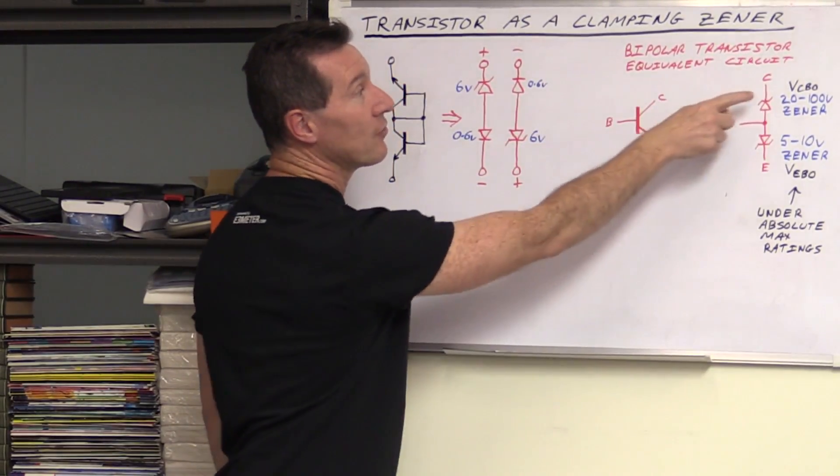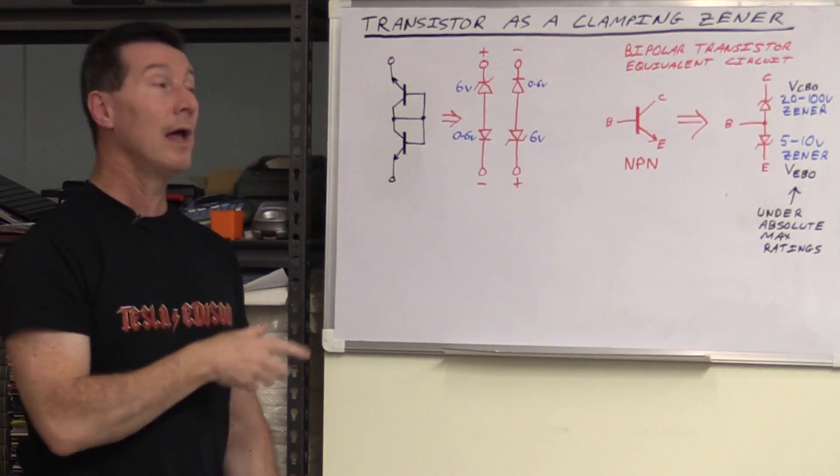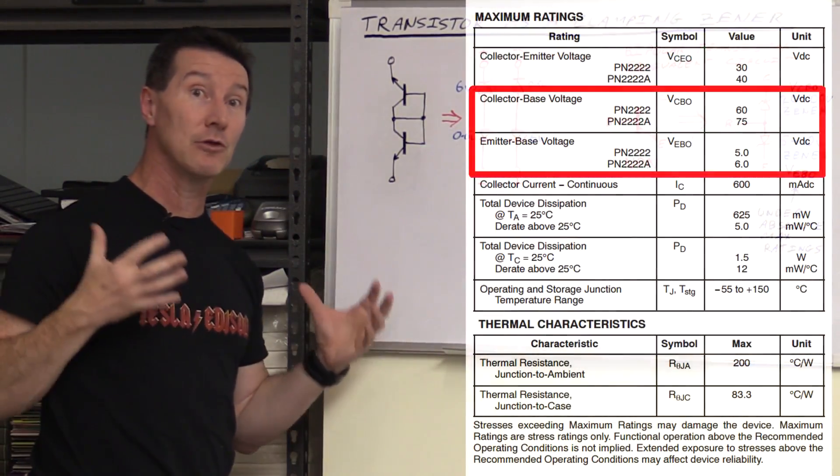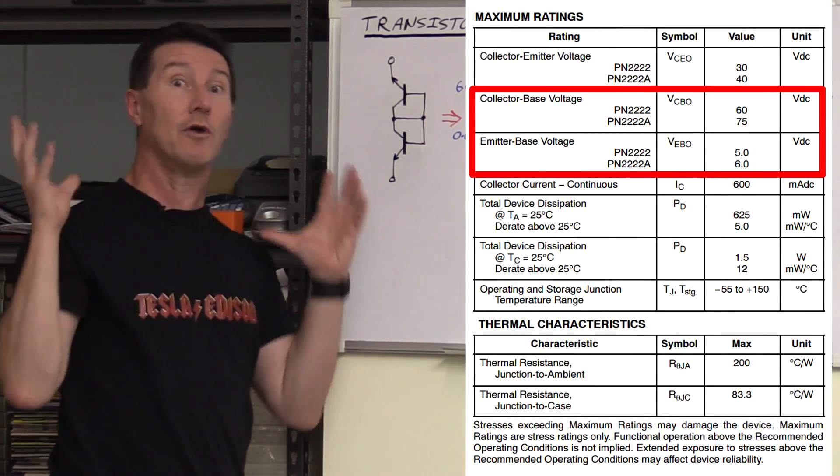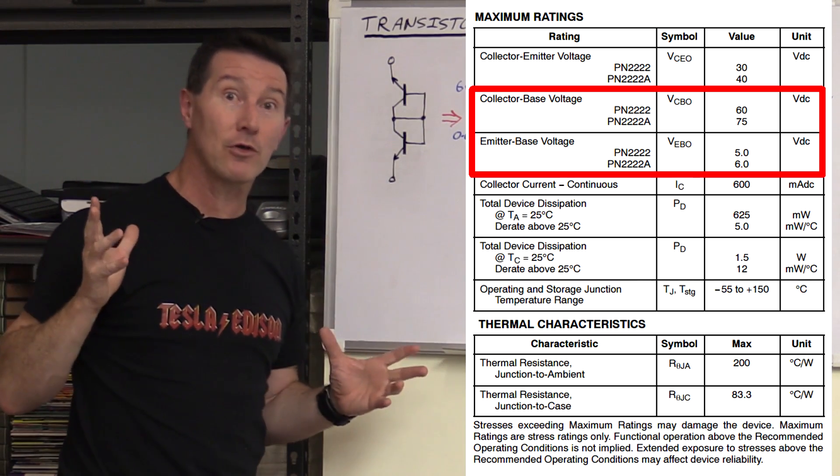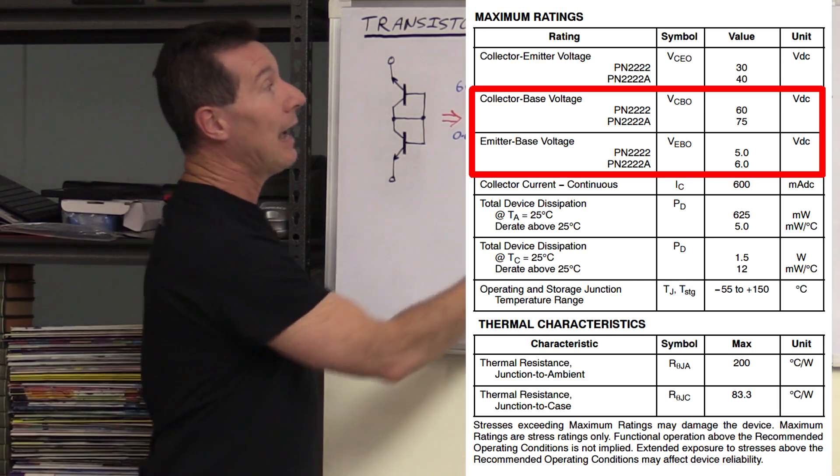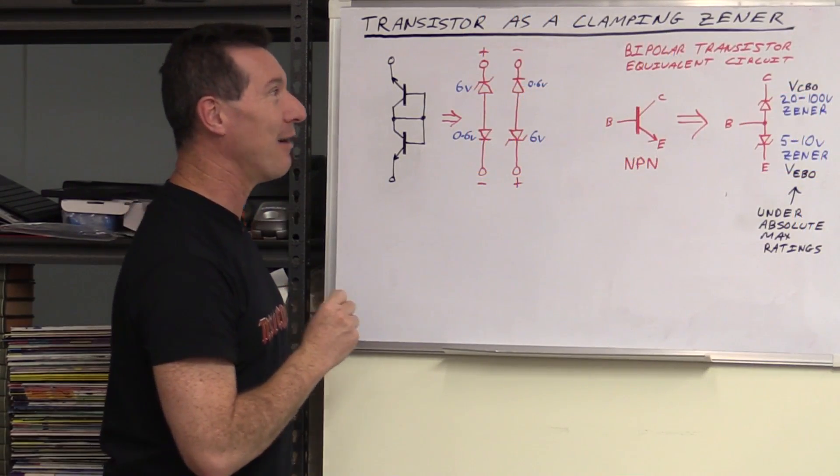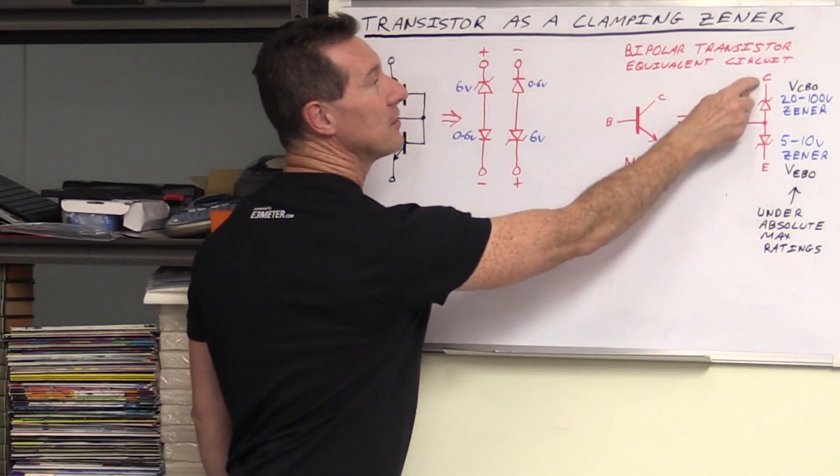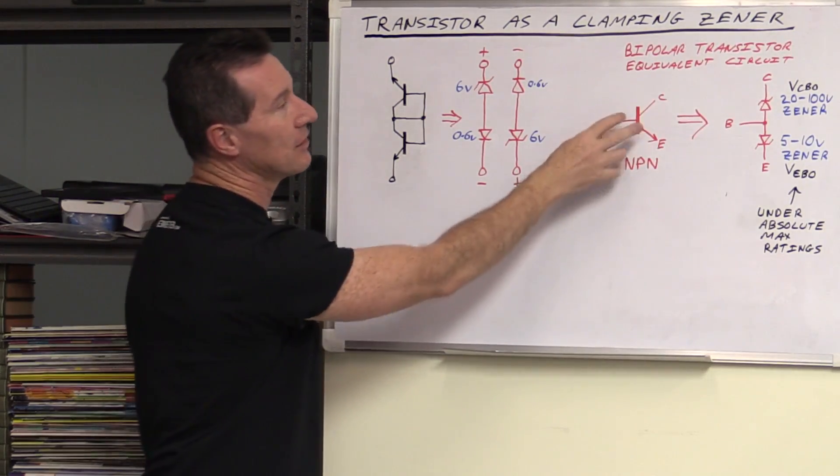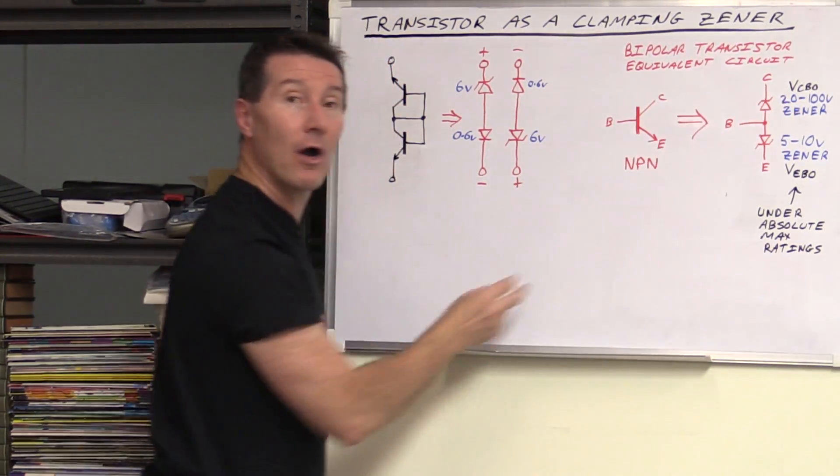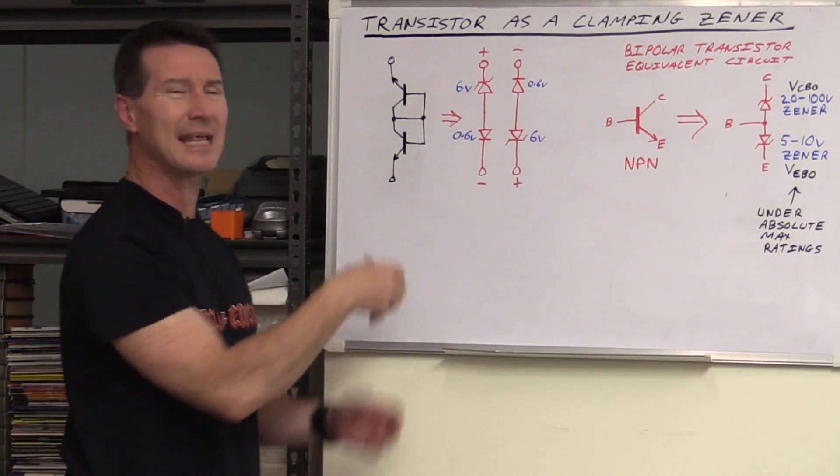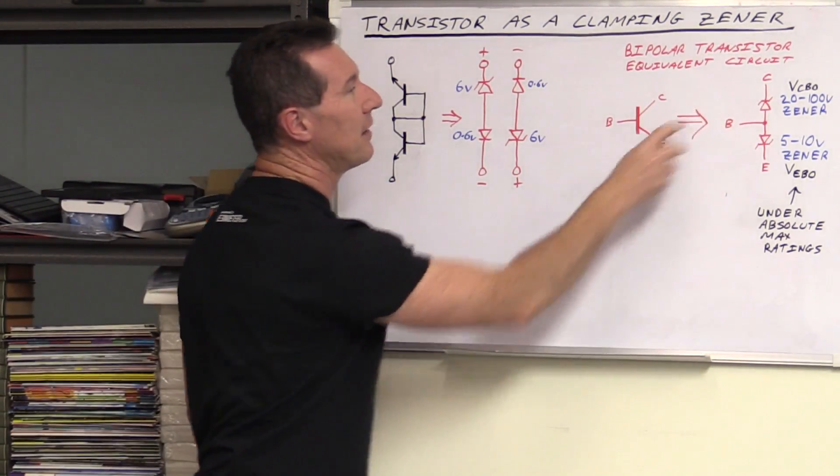Usually we don't want to operate in these ranges. But today, we are. We're going to be pretty naughty. In the reverse configuration here, because of the construction of the BJT, it has a much higher Zener voltage. Typically, twenty to a hundred volts, something like that.